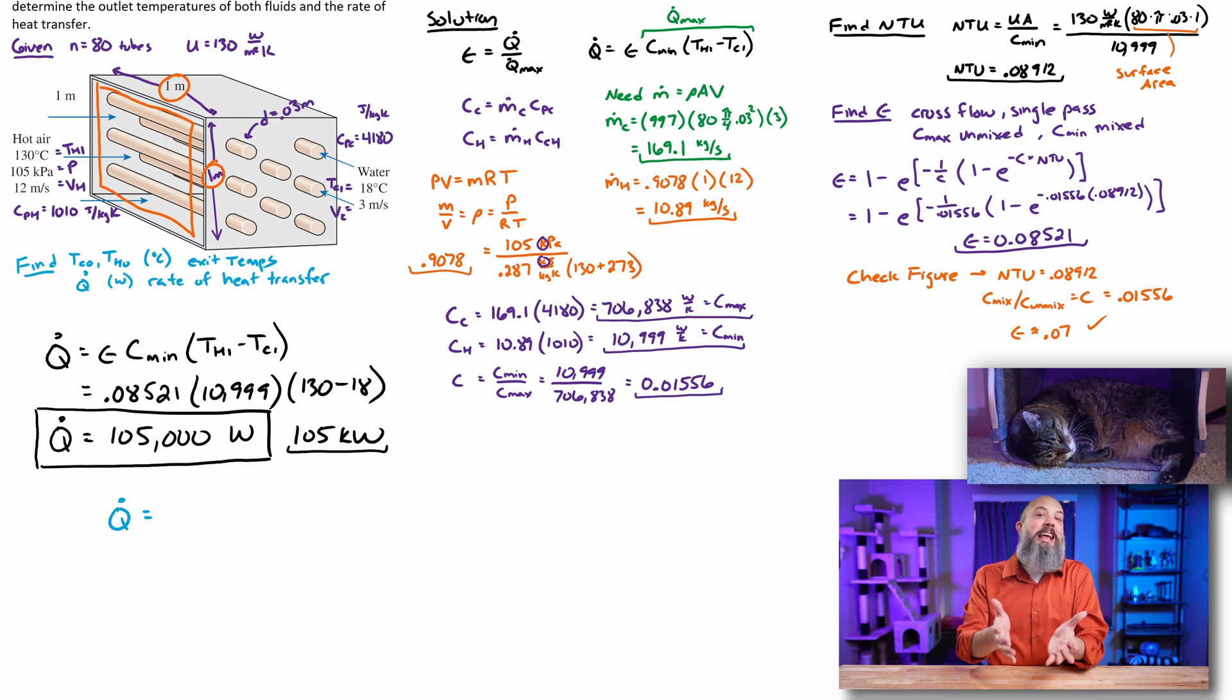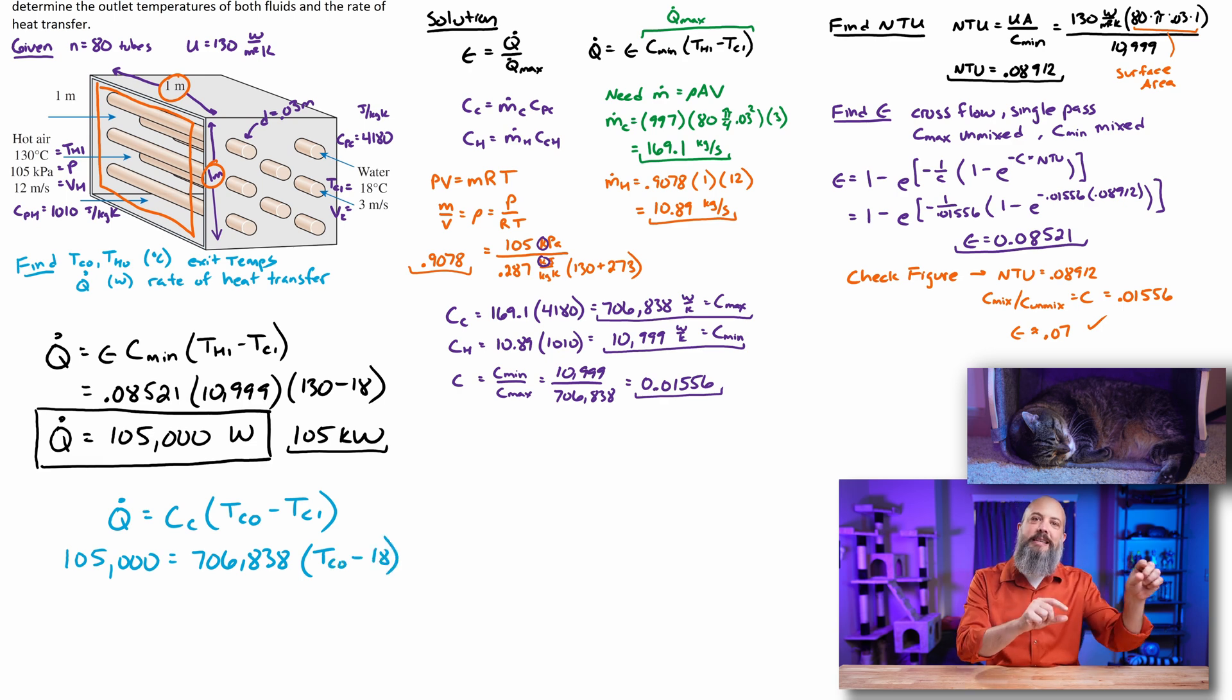But now we can calculate exactly what that exit temperature is. Now that we've solved for heat transfer rate q dot, we can solve for the exit temperatures. So m dot cp delta T, but m dot cp is just capital C, the heat capacity rate, the 706,000 that we already calculated, times the delta T cold, so T cold out minus 18. And with 105,000 for q, we'll actually find that the exit temperature is only 18.15 degrees.